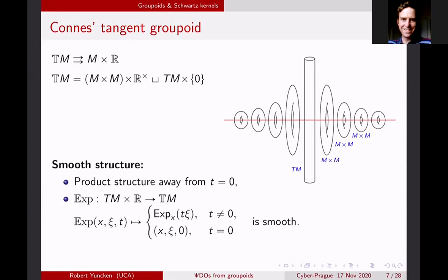Away from t = 0 the geometry is just M × M × ℝ×. Interesting things happen as I tend towards t = 0 — that's where all the interest in this tangent groupoid happens. I'm going to stretch my copies of M × M transversely to the diagonal so that when I actually get to t = 0, what I obtain is the normal bundle to the embedding of the diagonal in M × M. And if you know your geometry, the normal bundle to the diagonal in M × M is just the tangent bundle TM. The smooth structure is given at t = 0 by the exponential, the geometric exponential.